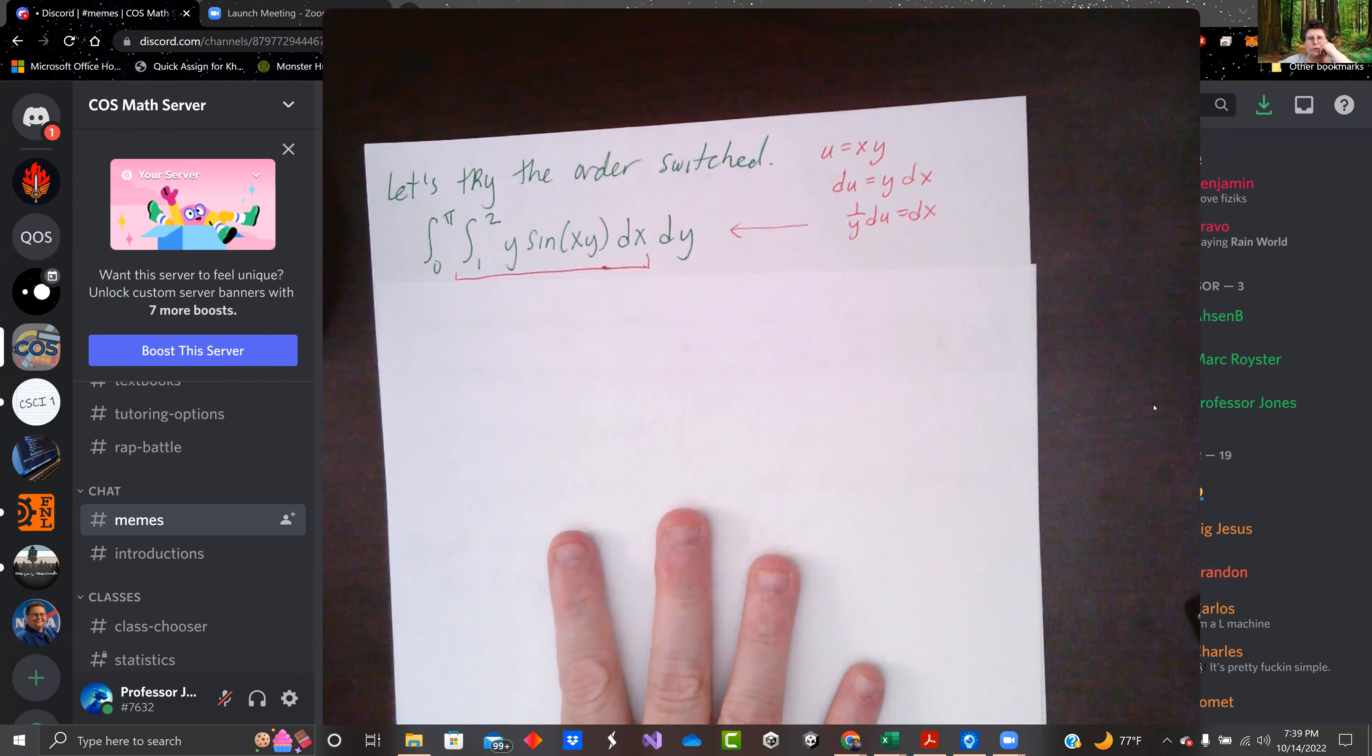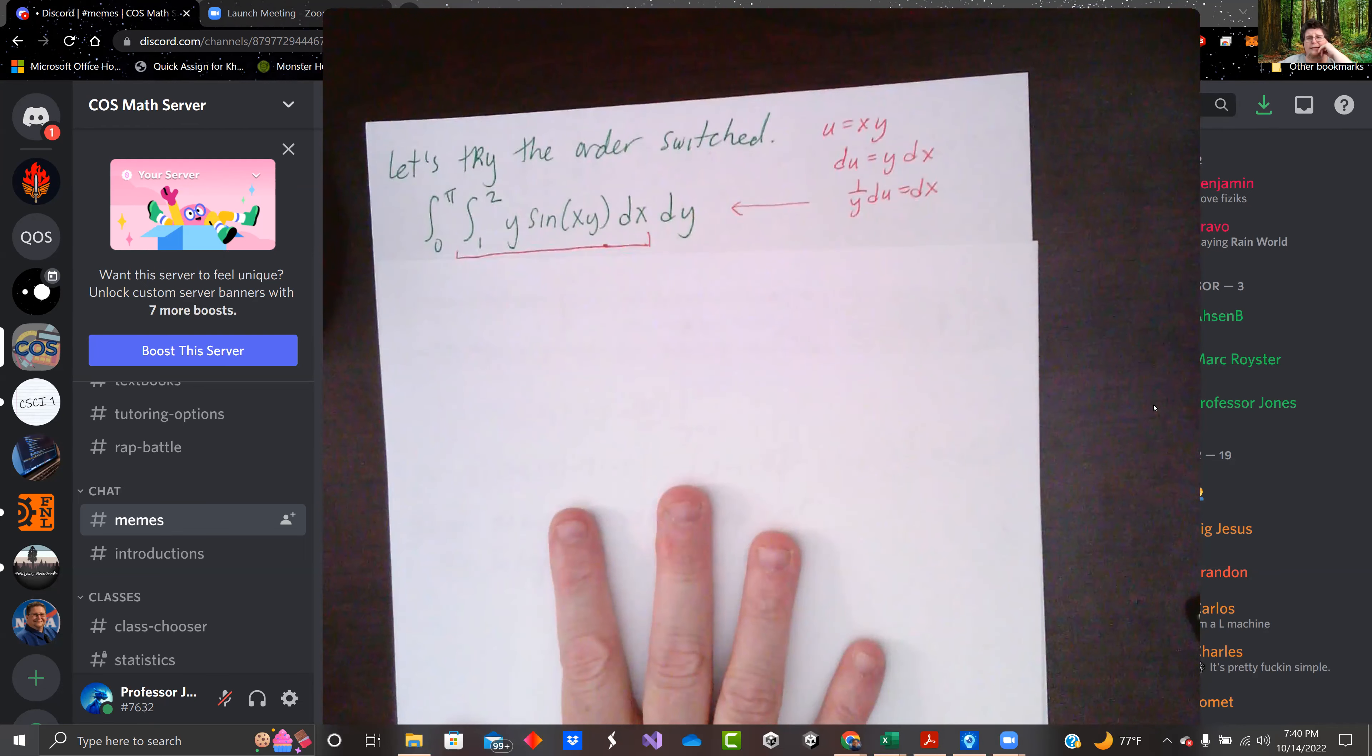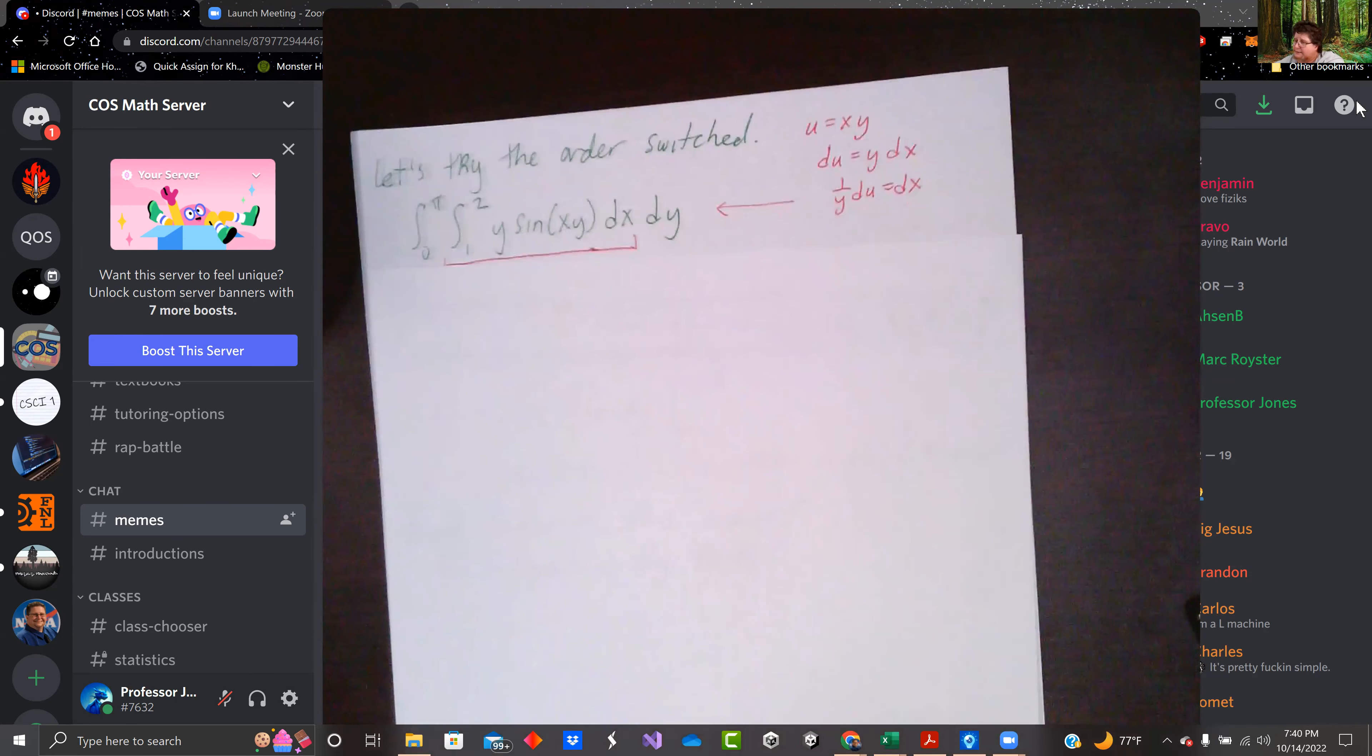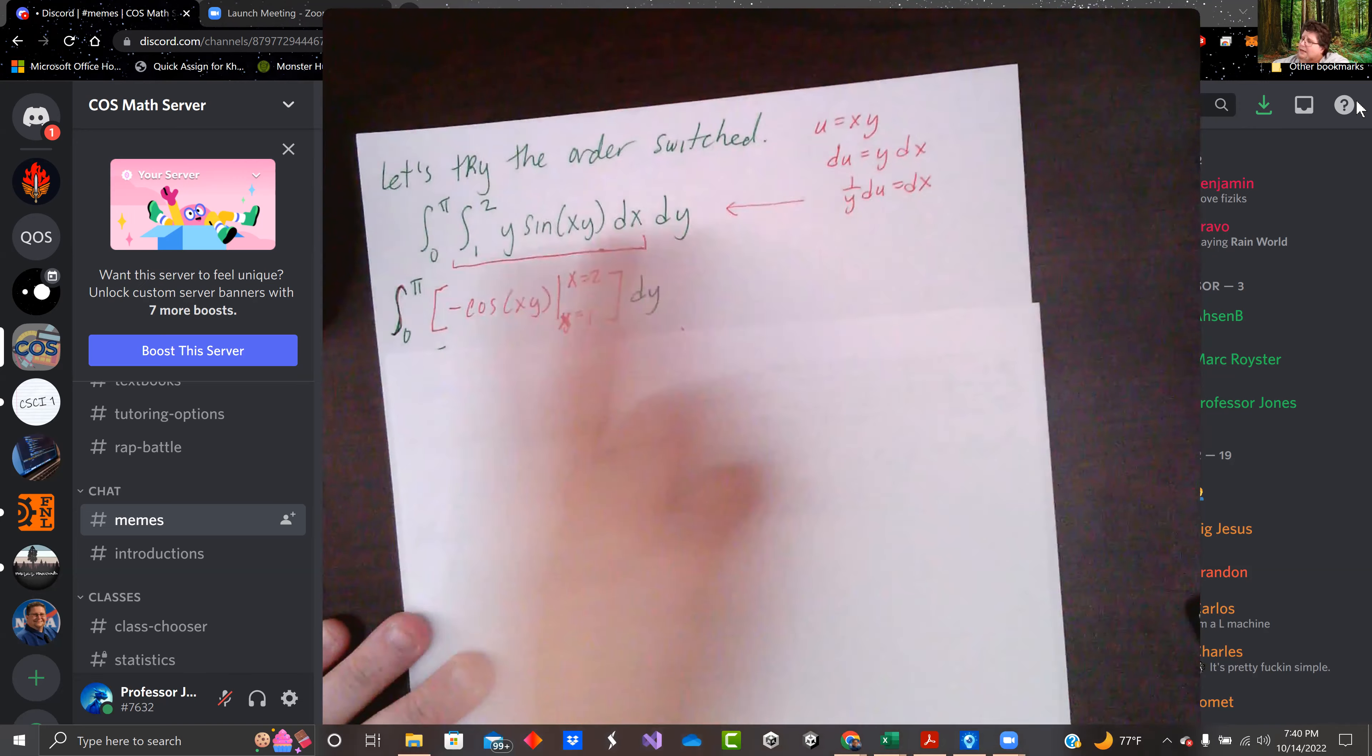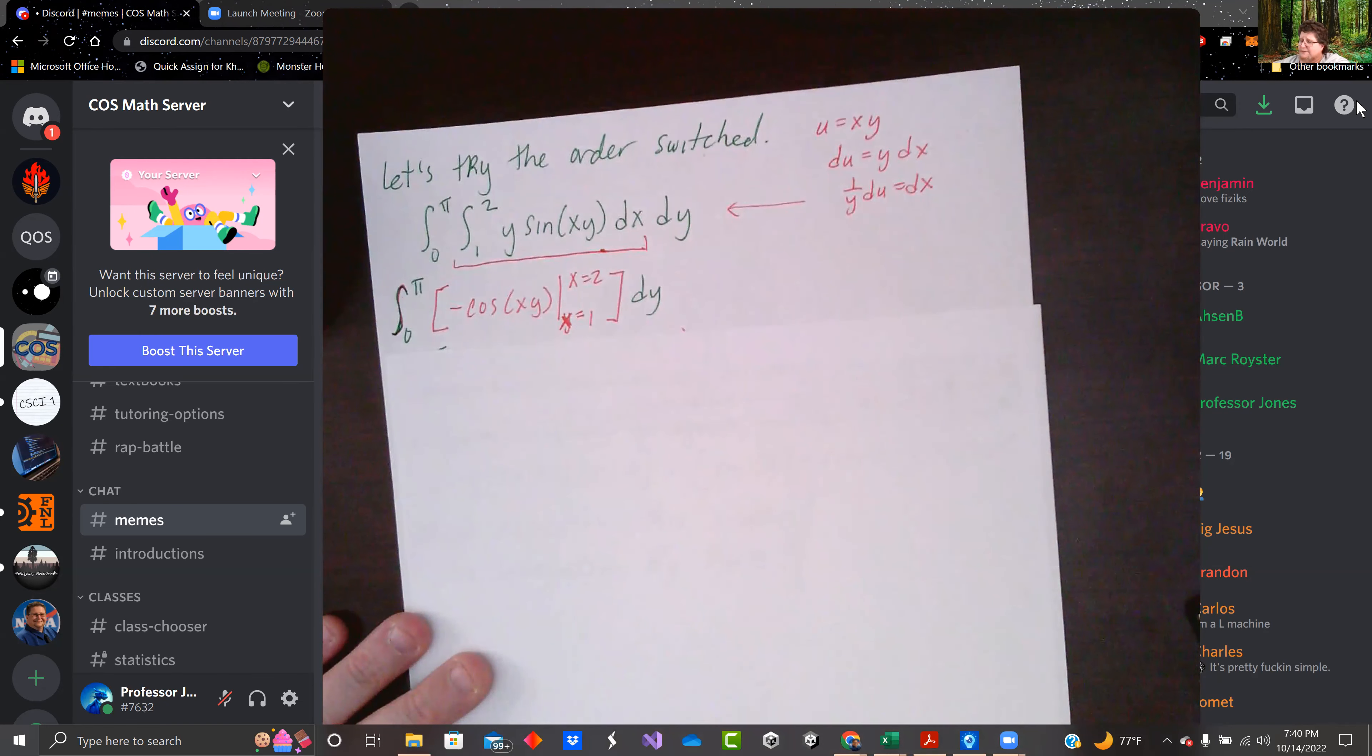I did a u-sub real quick. U equals xy. So du is y dx. We take the derivative with respect to x. And we get the y goes away because it's part of the dx. And we just have cosine of u.